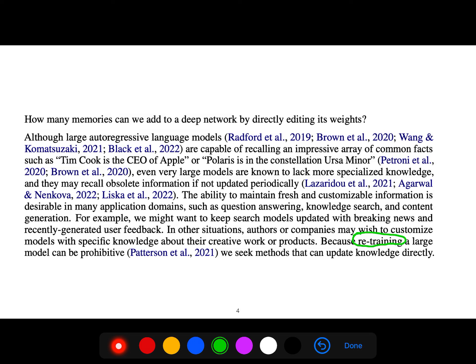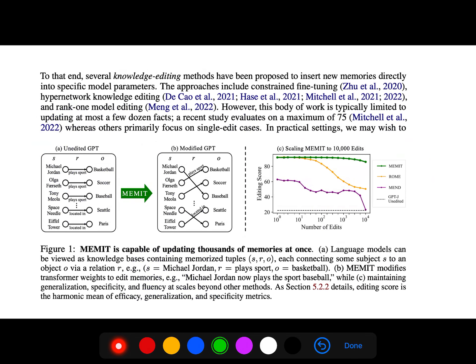Because retraining a large model can be prohibitive, we seek methods that can update knowledge directly. To that end, several knowledge editing methods have been proposed to insert new memories directly into specific model parameters. The approaches include constraint fine-tuning, hypernetwork knowledge editing. However, this body of work is typically limited to updating at most a few dozen facts. It's capable of updating thousands of memories at once.